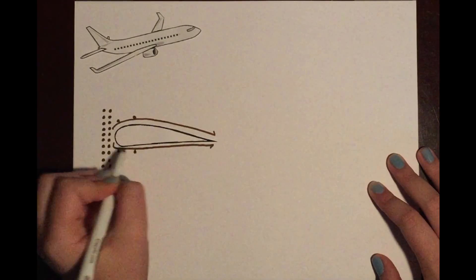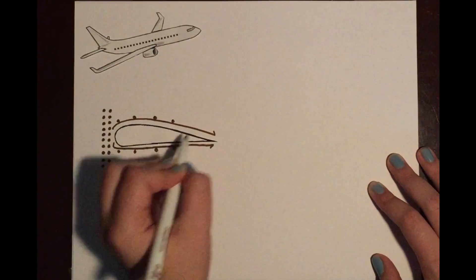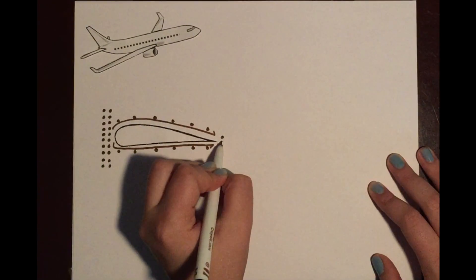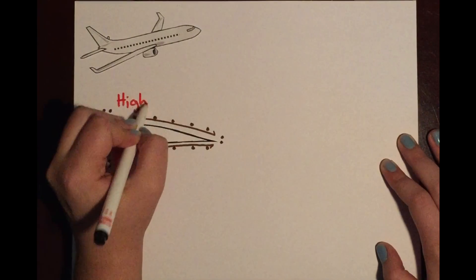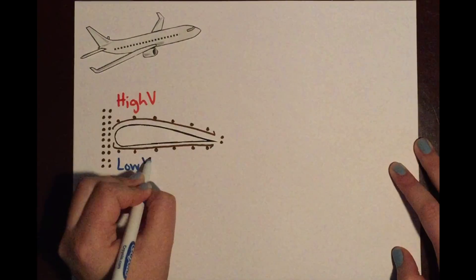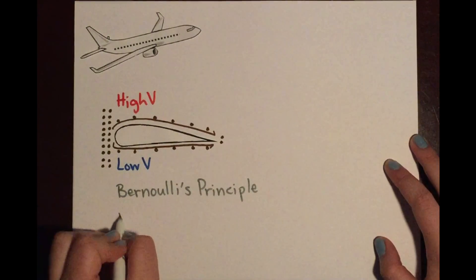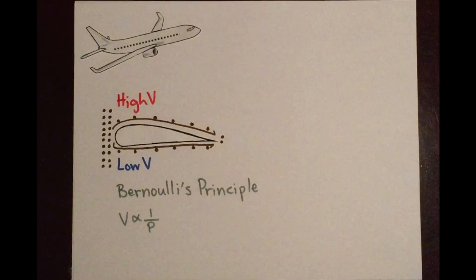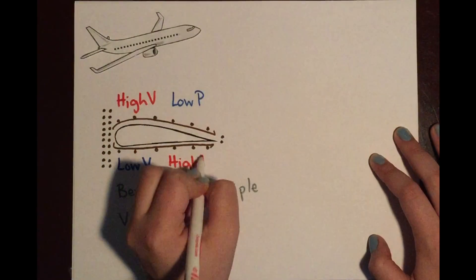The air particles moving over will have to move faster than those on the bottom because they have to cover a larger distance in the same amount of time. Therefore, there is a high velocity on the top and a low velocity on the bottom. Through Bernoulli's principle, we know that velocity is proportional to the inverse of pressure. Therefore, there is a low pressure on the top and a high pressure on the bottom.